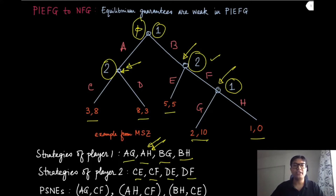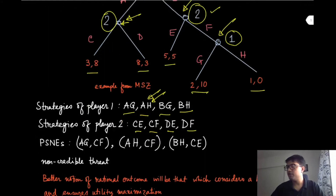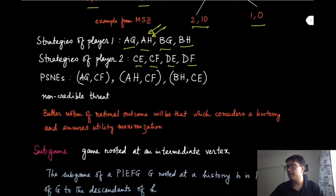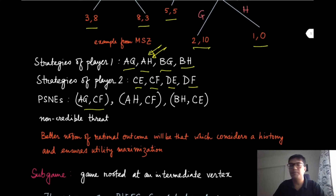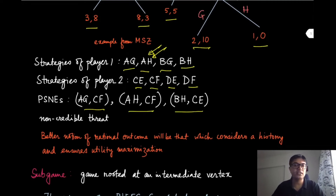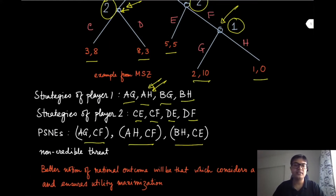You can do a very similar exercise to what we did in the last module: transform this game into a normal form game and find the PSNEs. There are three PSNEs in this case — AGCF, AHCF, and BHCE. These are the three possible outcomes. But like the previous example, there are certain things which are not really very credible.